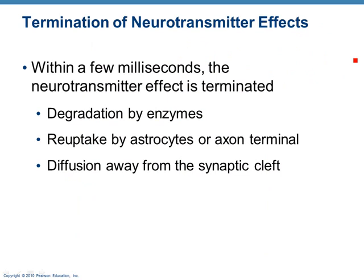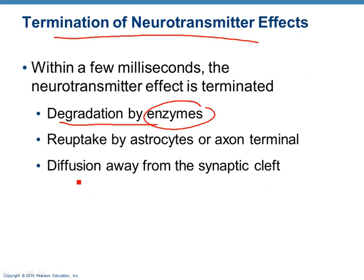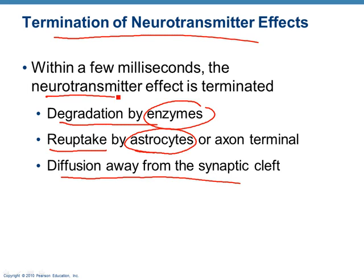Just like acetylcholine, you've got to get rid of those neurotransmitters — you've got to stop whatever action you're trying to elicit. You can either have the neurotransmitter broken down, like by acetylcholinesterase — there are similar esterases for other neurotransmitters that break them down by enzymes. They may diffuse away, just like acetylcholine. Sometimes the neurotransmitters are basically taken back up — reuptake — by those astrocytes, those support cells. They'll actually take up the neurotransmitter and take it back into the axon terminal to recycle it. One, two, or all three of those ways, you get rid of that neurotransmitter to stop the effect.